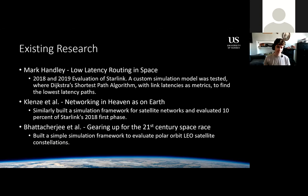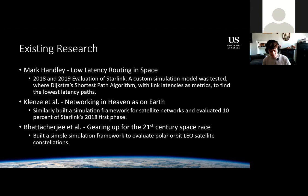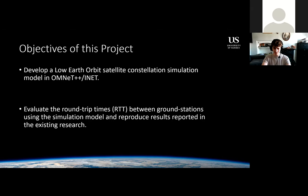There is quite a lot of existing research in this area where others have used their own simulation models. Handley created one in Unity using Dijkstra's shortest path algorithm with link latencies as metrics. Other papers such as 'Network in Heaven and Earth' also do early-stage work. What I found when researching this topic is that none of these models are open — no one else can use them, and there's very little information on how they were built. This is why I decided to create a simulation model in OMNeT++ and INET, allowing the entire research community to test these models and reproduce results, both to validate the simulation model and to test the validity of the constellations themselves.